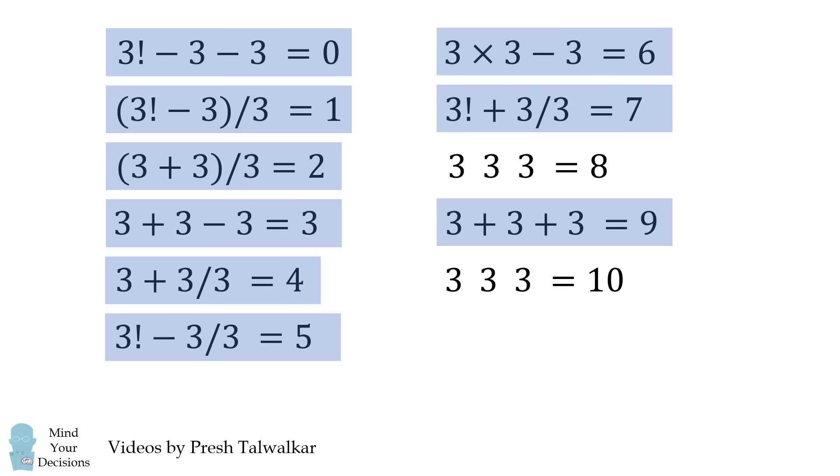To get to 7, one way is 3 factorial plus 3 over 3. We could also do 3 factorial plus the quantity 3 minus 3 factorial. And because 0 factorial is equal to 1, this equals 7. We could also do 3 divided by 0.3, subtract 3, and that also gets to 7. To get to 8, we have 3 factorial plus 3 factorial over 3.